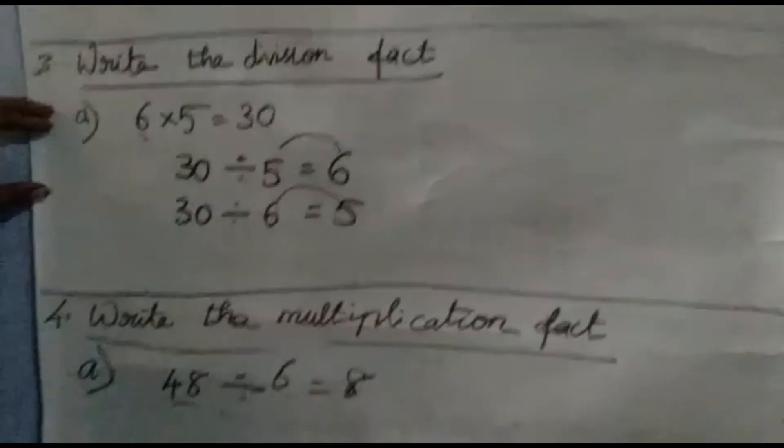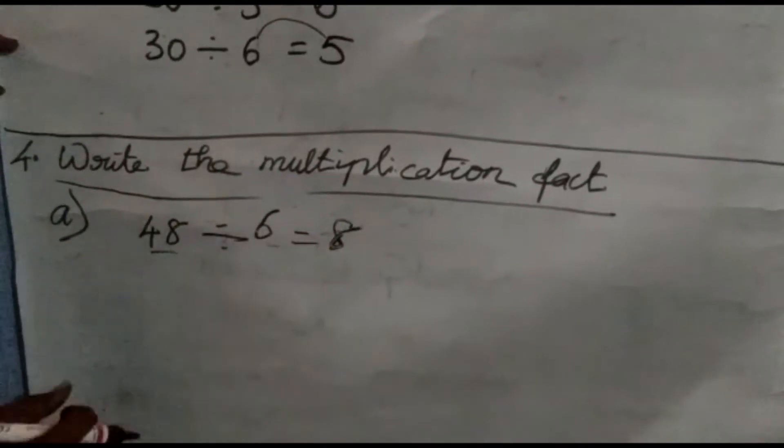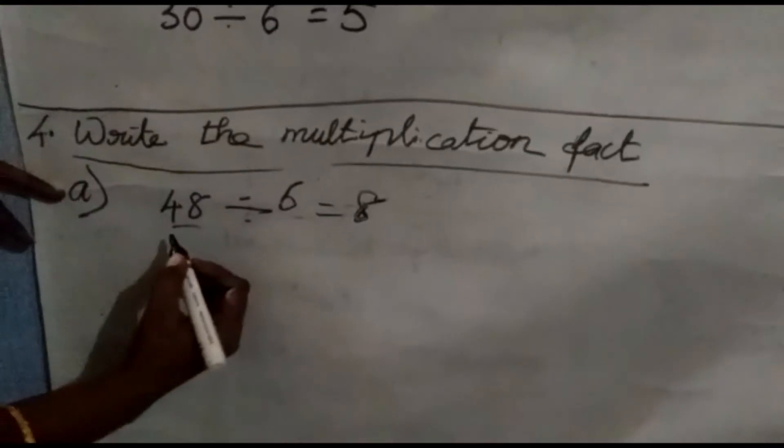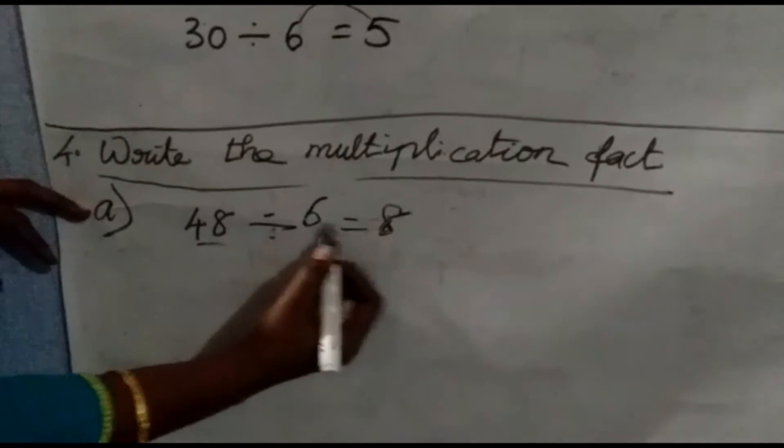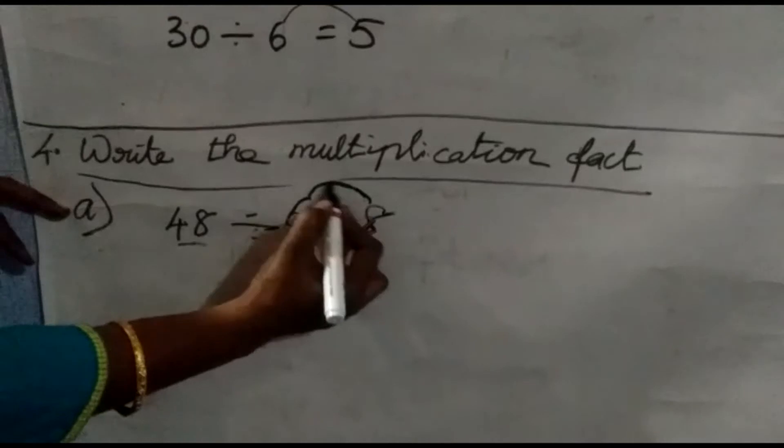Now next, write the multiplication fact. Here, division fact is given. Now we are going to write multiplication fact. Again, we can write two multiplication facts for this. See here, 48 divided by 6 equals 8. Just multiply these two numbers. I already told you, if you multiply that, we get the product as 48. 8 times 6 are 48.